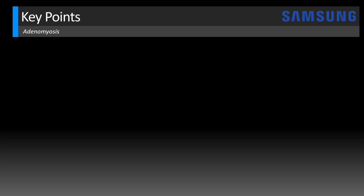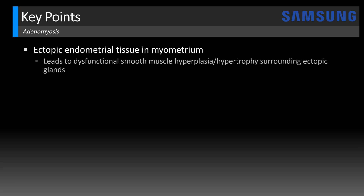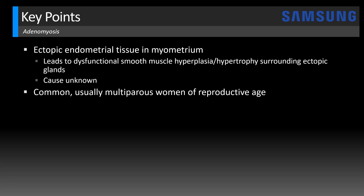Let's start with some definitions. Adenomyosis occurs when ectopic endometrial tissue, glands, and stroma deposit in the myometrium. This leads to dysfunctional smooth muscle hyperplasia and hypertrophy surrounding these ectopic glands. The cause is unknown, but it's fairly common. It's usually seen in multiparous women of reproductive age — multiparous meaning women that have had more than one child.